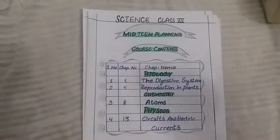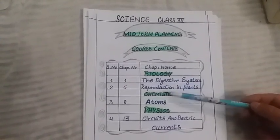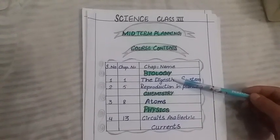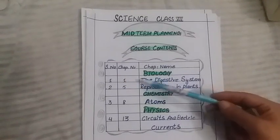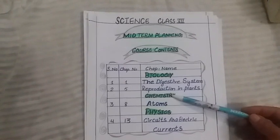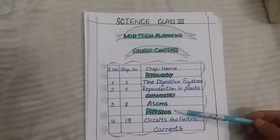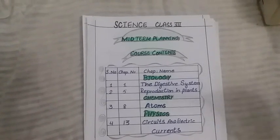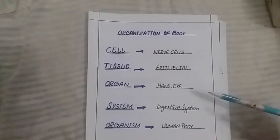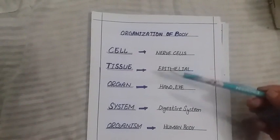This is the course content of your class 7 biology, chemistry, and physics. The first topic which we are going to start is the digestive system, topic number 1. The second topic is reproduction in plants. Then in the chemistry section, we have the topic atoms. In the physics section, we have the topic circuits and electric current. Before going directly to the topic of the digestive system, we will first discuss the organization of the body.